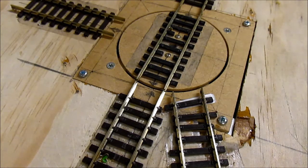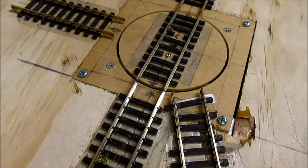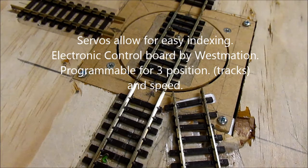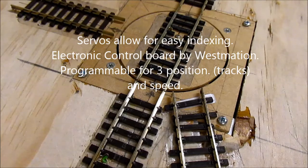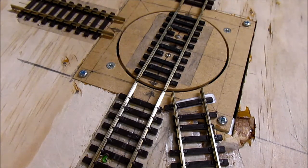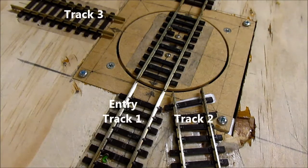This video is a demonstration of my servo driven small turntable. The track on the deck is HO2 gauge and I designed this primarily for OEM30. You can see it's lined up with the bottom track which is the one I call track 1, it's the entry track.